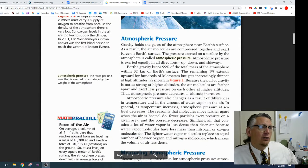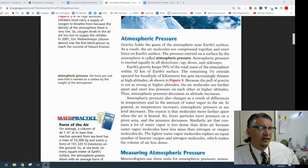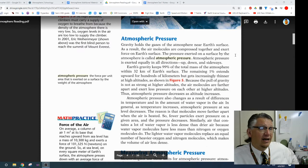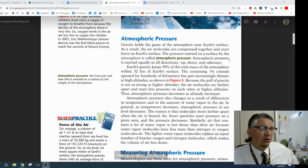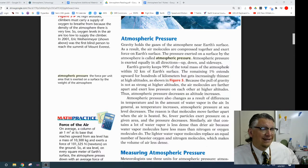Atmospheric pressure. Gravity holds the gases of the atmosphere near Earth's surface. As a result, the air molecules are compressed together and exert force on Earth's surface. The pressure exerted on the surface by the atmosphere is called atmospheric pressure. Atmospheric pressure is exerted equally in all directions: up, down, and sideways. Earth's gravity keeps 99% of the total mass of the atmosphere within 32 kilometers of Earth's surface. The remaining 1% extends upwards for hundreds of kilometers but gets increasingly thinner at high altitudes, as shown in Figure 5. Because the pull of gravity is not as strong at higher altitudes, the air molecules are further apart and exert less pressure on each other at higher altitudes. Thus, the atmospheric pressure decreases as altitude increases.